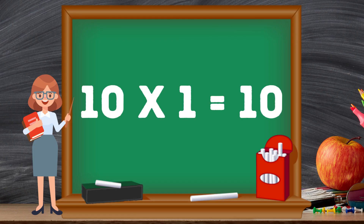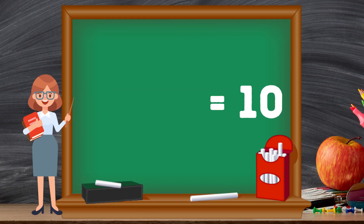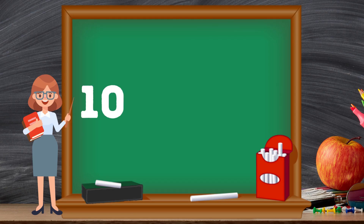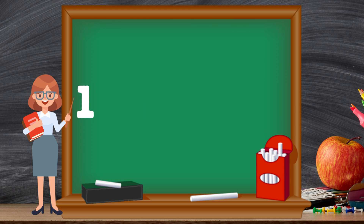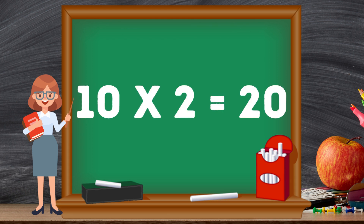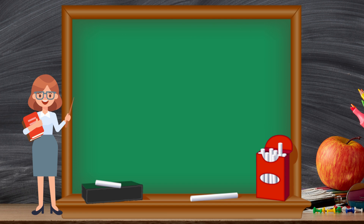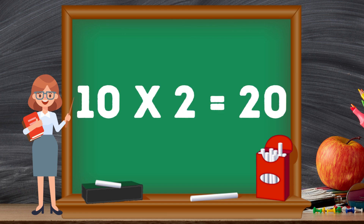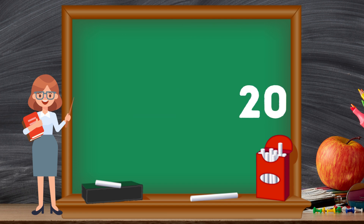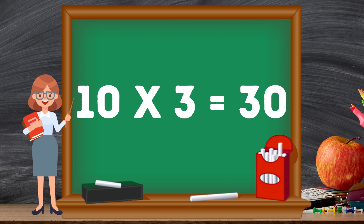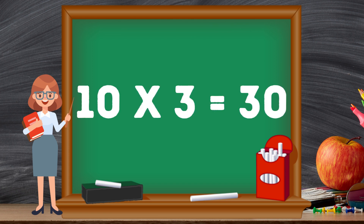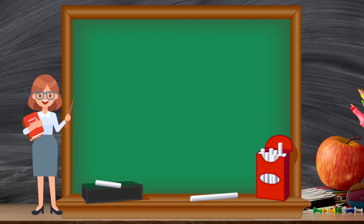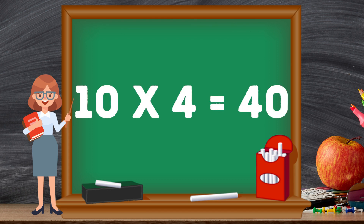Ten ones are ten. Ten twos are twenty. Ten threes are thirty. Ten fours are forty.